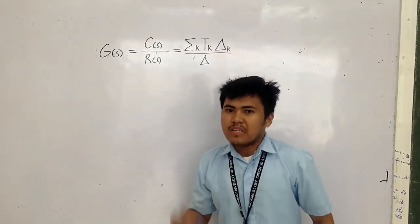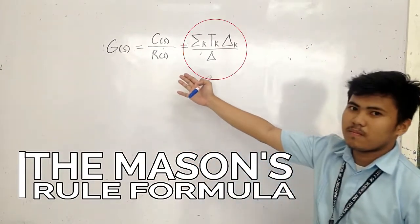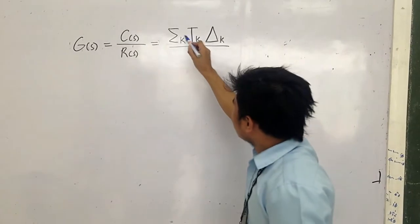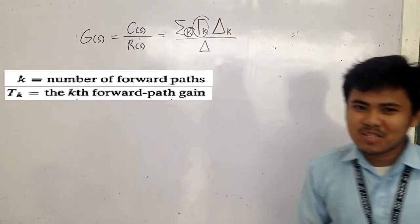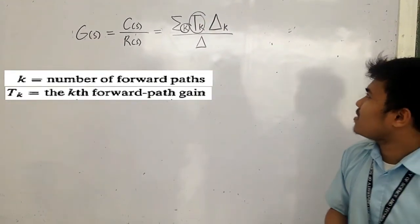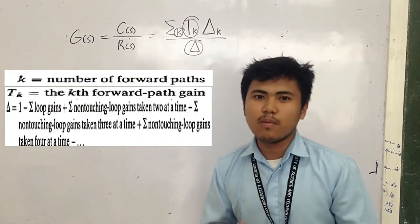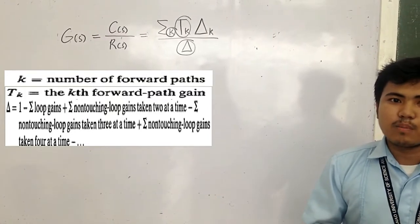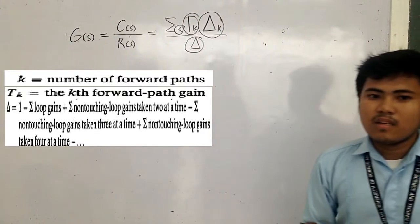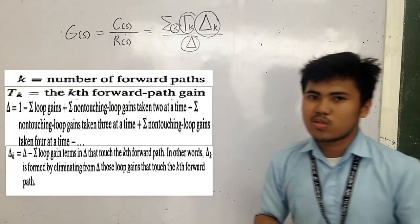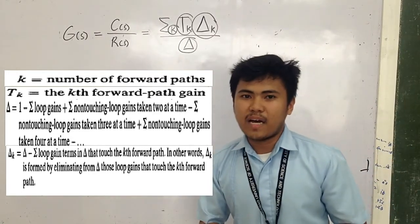The transfer function C(s) over R(s) can be represented by Mason's formula. The symbol G represents the number of forward paths. T_k is the gain of the k-th forward path. Delta is equivalent to 1 minus the summation of loop gains plus non-touching loop gains taken at a time. Delta_k is equivalent to Delta minus the summation of loop gains and non-touching loop gains that touch the k-th forward path.